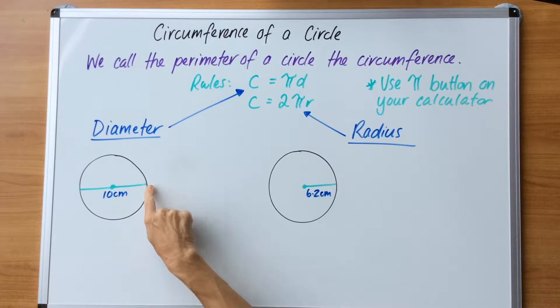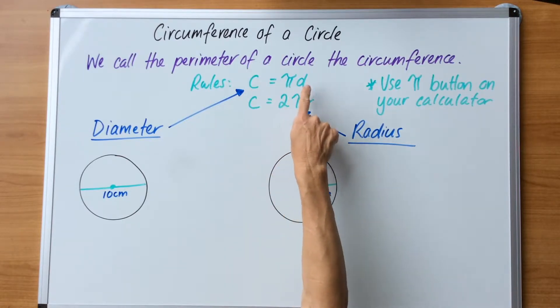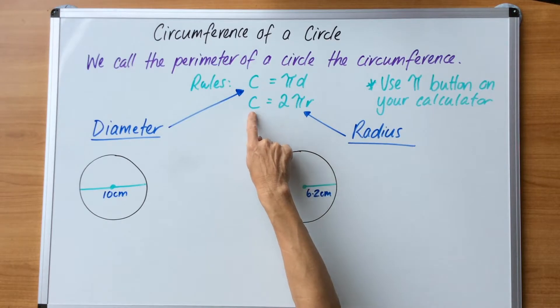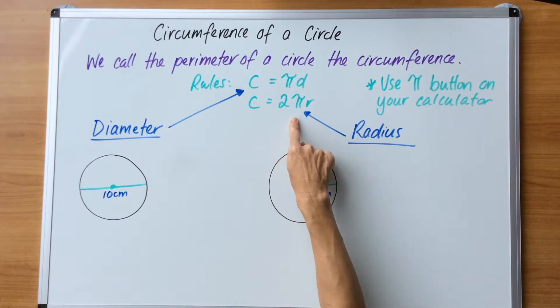If you get a question that has this type of diagram showing the diameter, you use the rule C equals pi D, so circumference equals pi times diameter. If you get a question that shows the radius and it looks like this, use this rule C equals 2 pi R, that means 2 times pi times R.